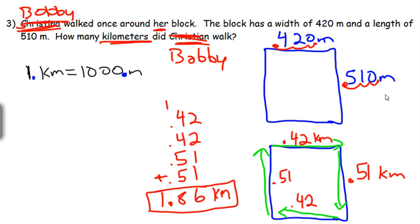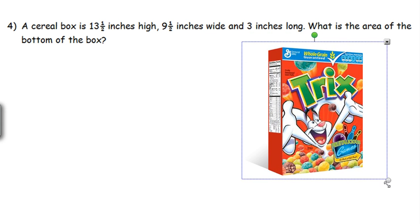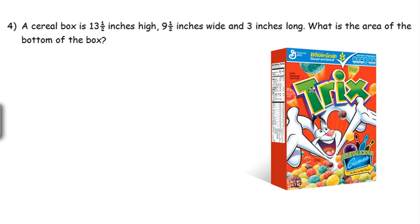Number four: A cereal box is 13 and a half inches high, 9 and a half inches wide, and 3 inches long. What is the area of the bottom of the box? There's our box of Trix, which is my cereal of choice right now. The box is 13.5 inches high, 9.5 inches wide, and 3 inches long. What is the area of the bottom? All I care about is this bottom.